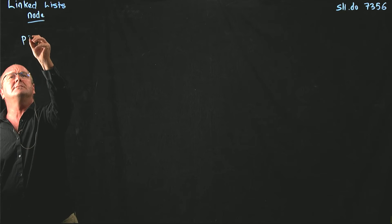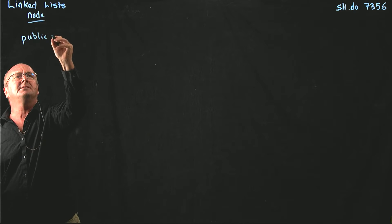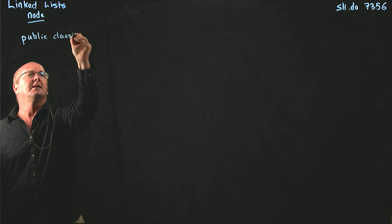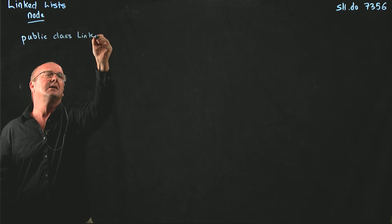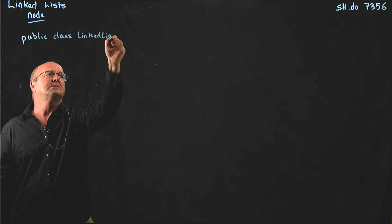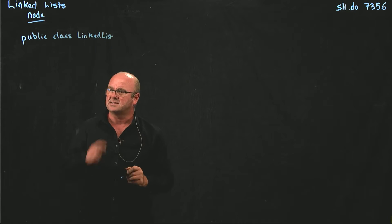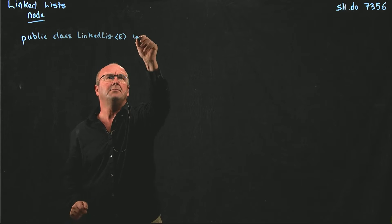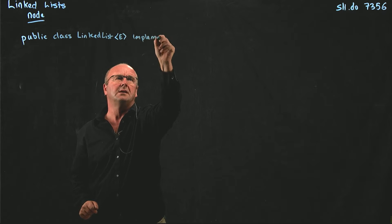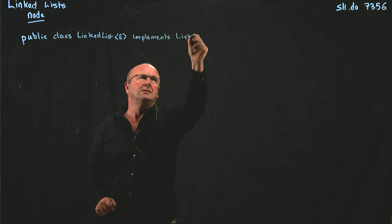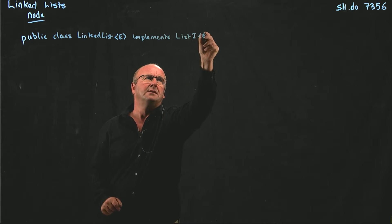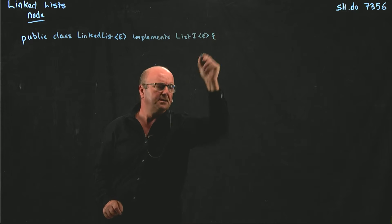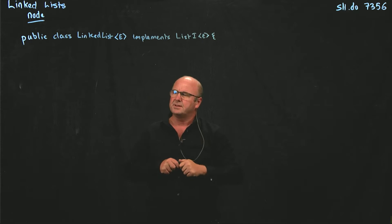So a class that defines a linked list looks something like this: public class LinkedList E implements List I E. That should be the first line of your linked list code.